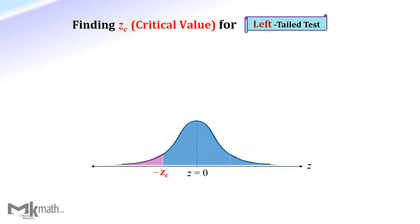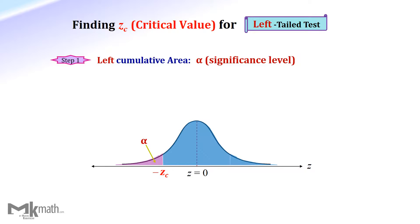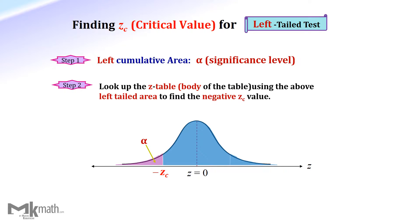First, finding the z-critical value for a left-tailed test. Step 1: since this is a left-tailed test, the left area is given as the significance level alpha. Step 2: because we use the left cumulative z-table, find the corresponding z-score using the left-tailed area.